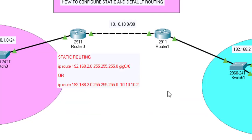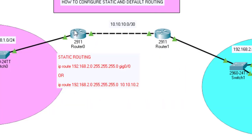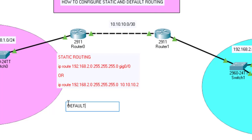Now, what about default routing? Default routing configures a router to forward all packets to a single next-hop router. If you configure this router with default routing, every packet will be forwarded to that next-hop router. Similarly, if you configure the other router with default routing, every packet it receives will be forwarded to its designated next hop. Very simple — let me show you the command.